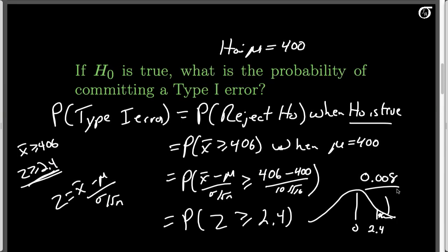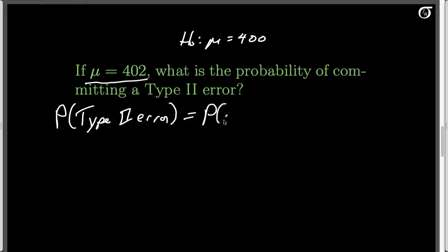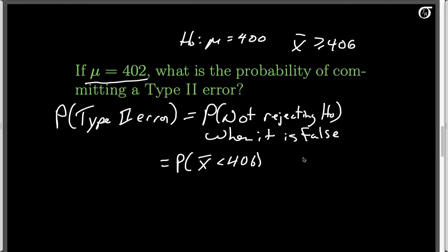Now let's look at the probability of a type 2 error. If mu is actually equal to 402 — and recall we're still testing H₀: mu equals 400 against mu greater than 400 — what is the probability of a type 2 error? A type 2 error is not rejecting the null hypothesis when it is false. We reject when x-bar is bigger than or equal to 406, so not rejecting means x-bar is less than 406. There isn't one global probability of a type 2 error — it depends on the true value of mu, and here we're supposing mu equals 402.